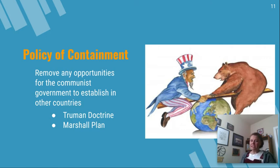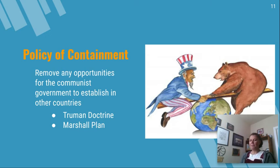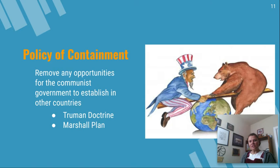The United States was very concerned about communism spreading. We have a picture of Uncle Sam and the Soviet Union represented by a bear — a common symbol for the USSR, the Russian bear. The United States was making policies to remove any opportunities for communism to spread. Unfortunately, China had turned communist under Mao Zedong, and the USSR is communist. So the U.S. was worried about other countries turning to communism, and they established two very important programs: the Truman Doctrine and the Marshall Plan.